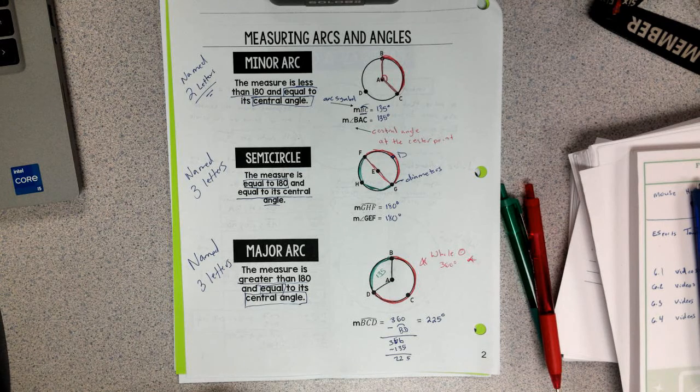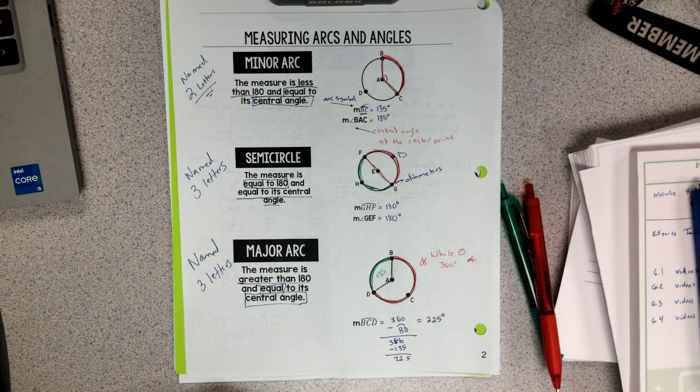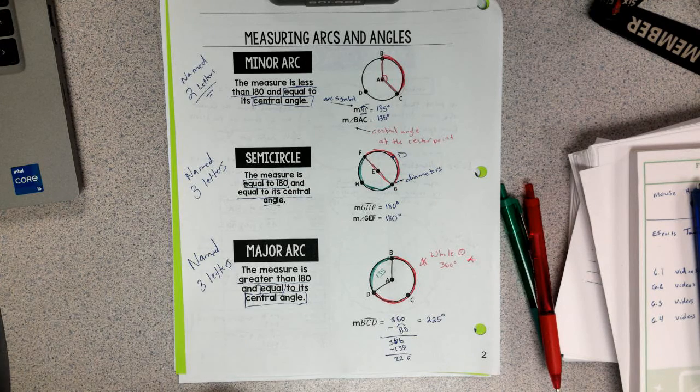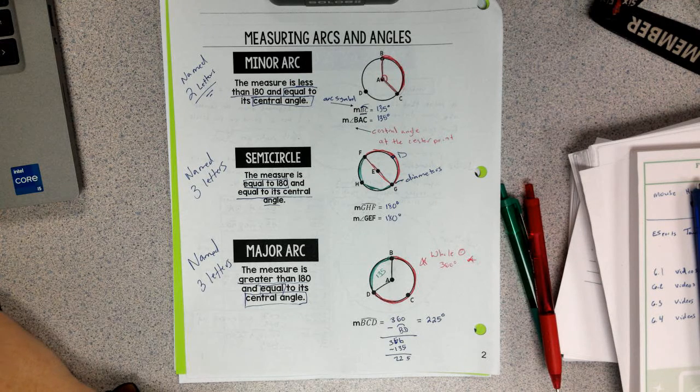And that is how you name minor arcs, semicircles, and major arcs. Remember, minor arcs are named with two letters, and we stay on the curve for all of these guys. Semicircle and major arc are going to be three letters.